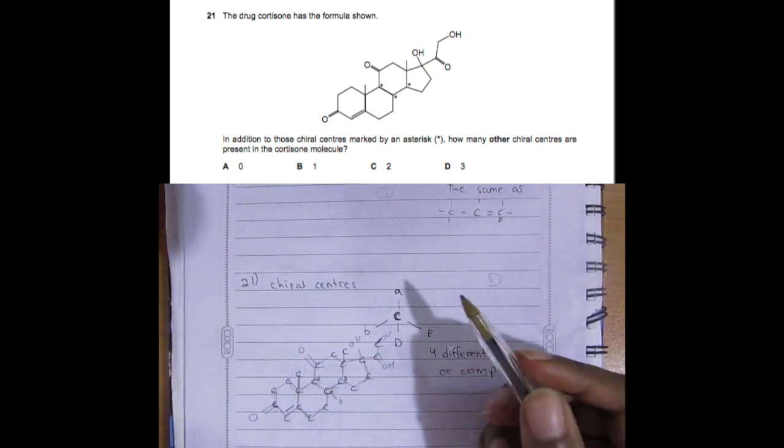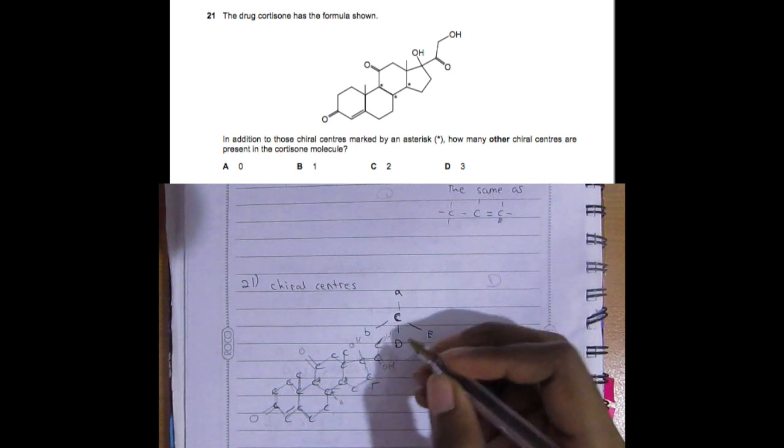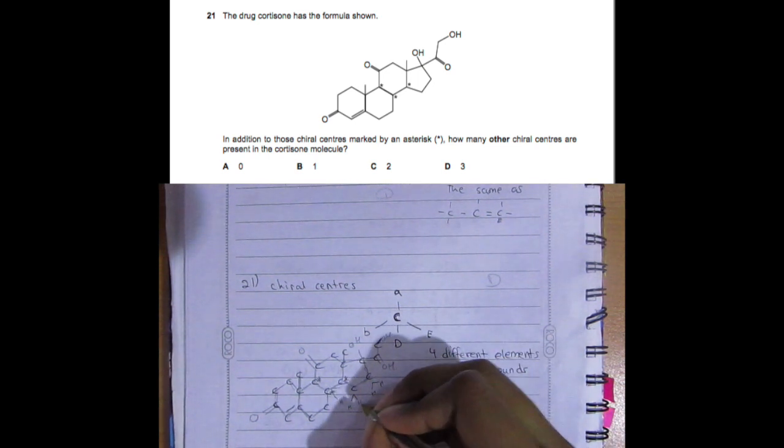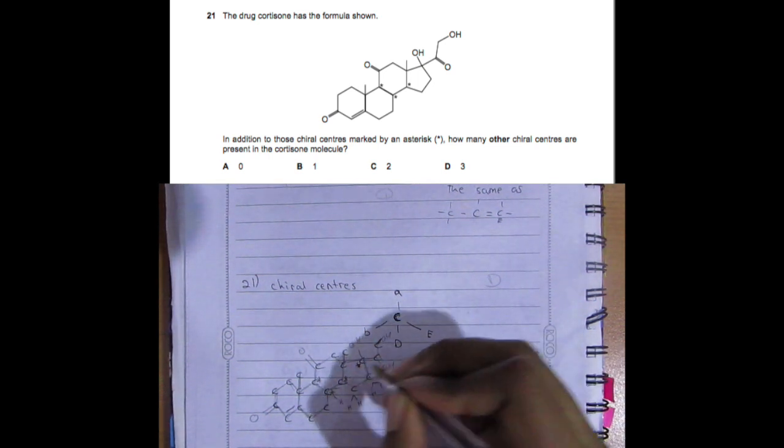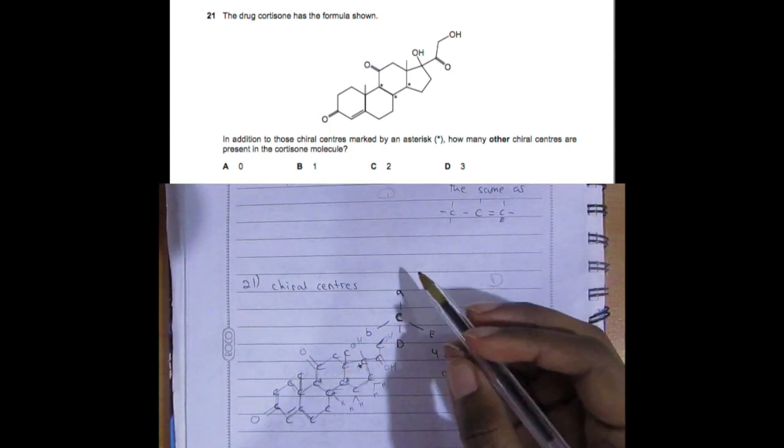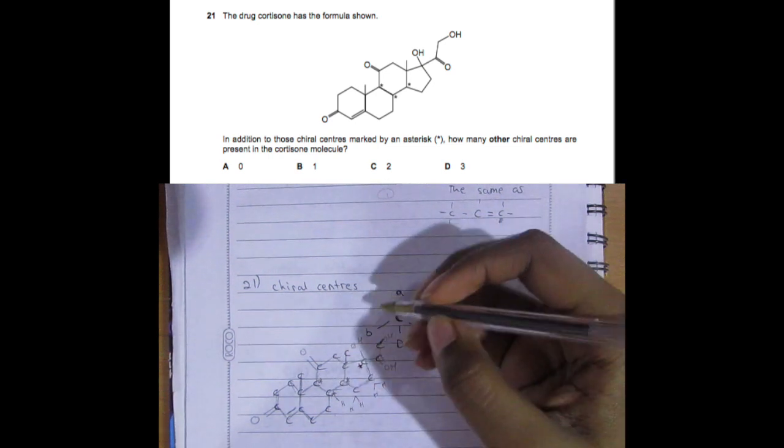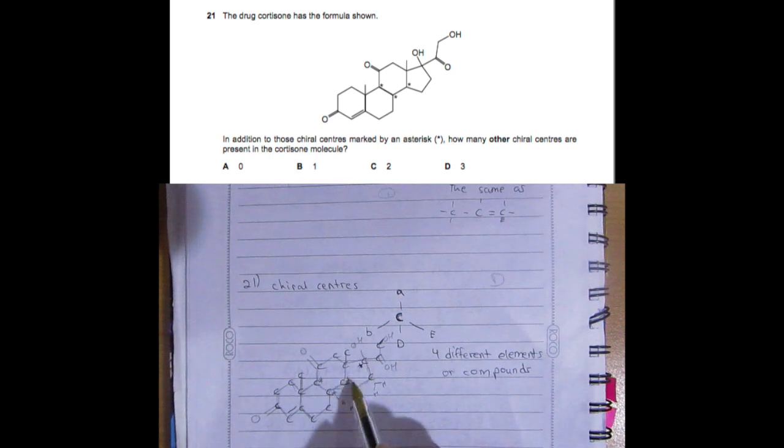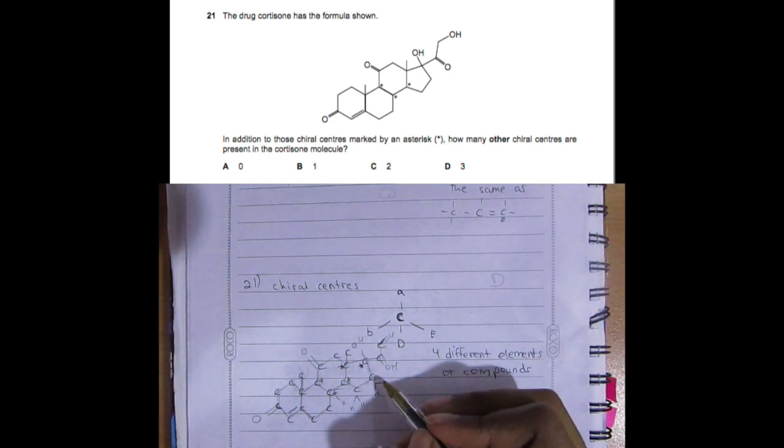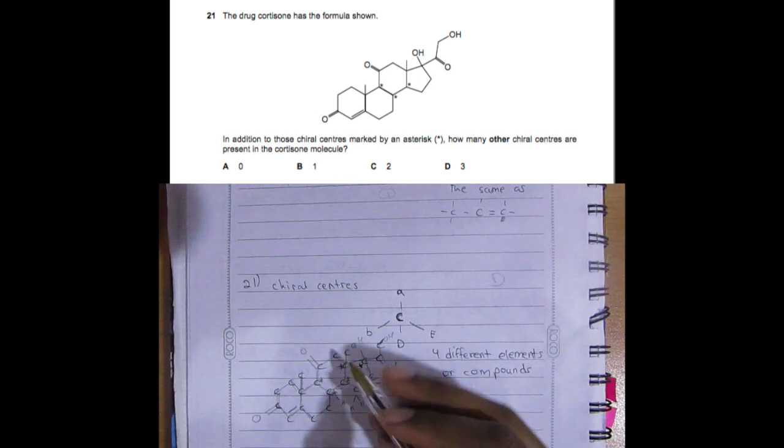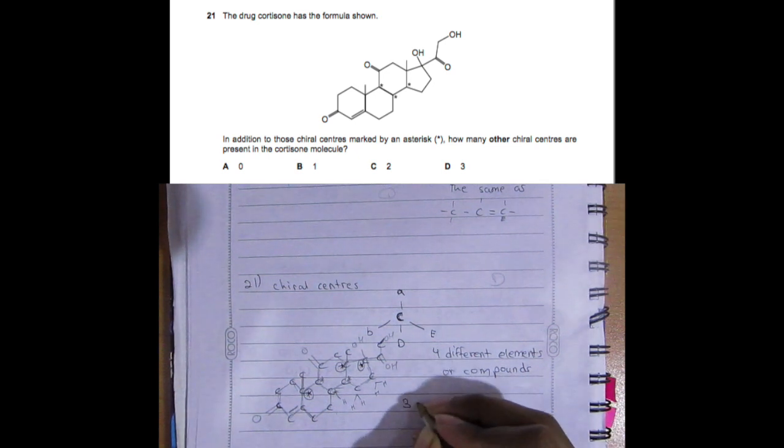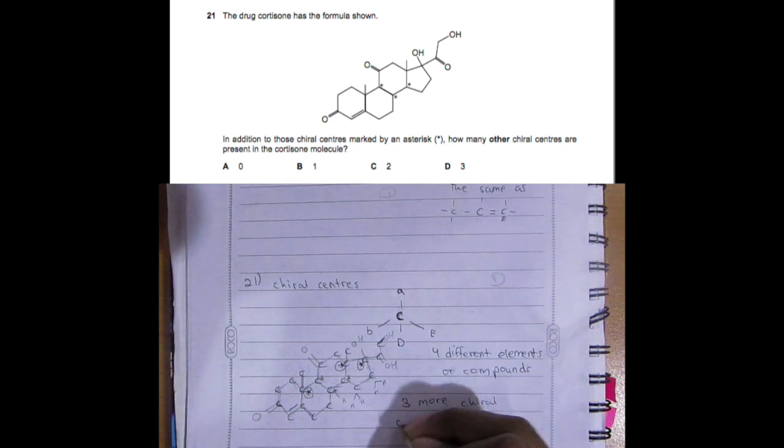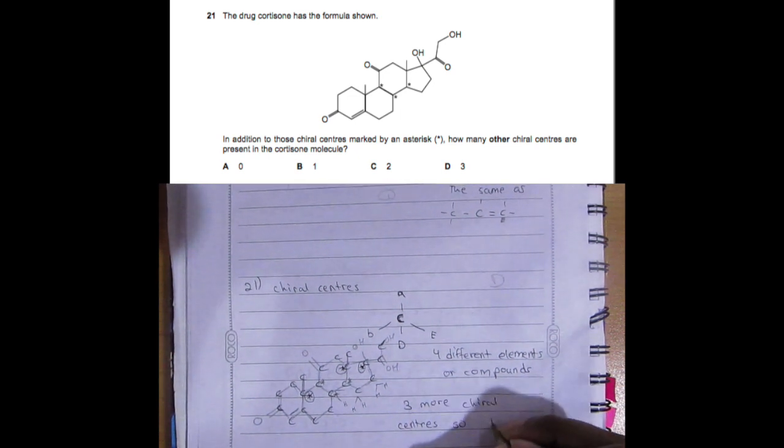They're all four different things, so we can check which other one has that. Here you have two hydrogens the same, so non-option. Two hydrogens, non-option. Here you have an OH - this is different, this is different, and so is this. So here you have an actual chiral center. Here is a no, here is also a no, here is a no. Here you have this and these, so this is another chiral center. So one, two, three - you have three more chiral centers, so D is the answer.